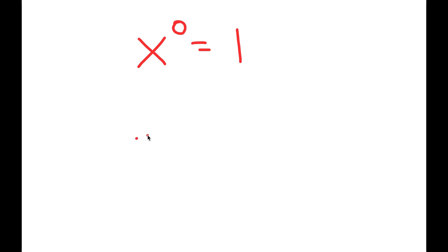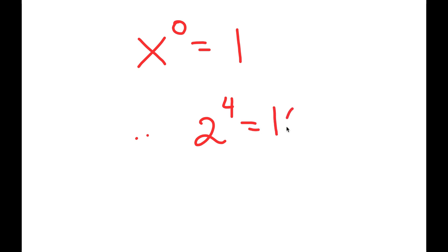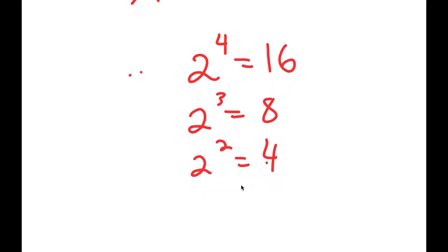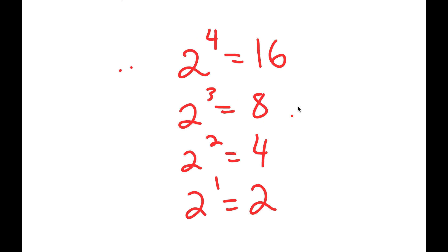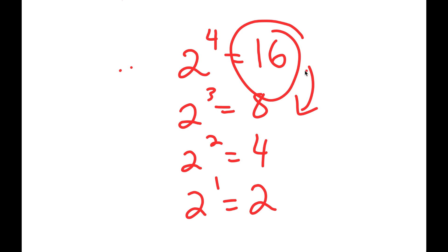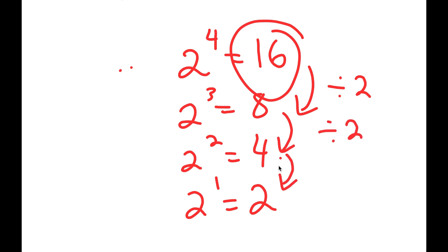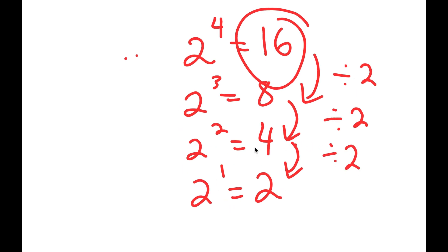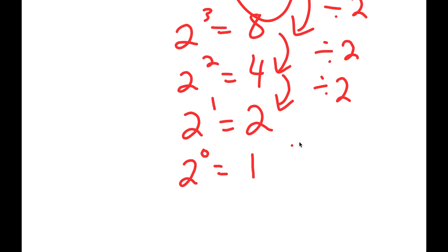Let's use the number 2 as an example. We start with 2 to the power of 4 which is 16, then 2 to the power of 3 which is 8, then 2 squared which is 4, and 2 to the power of 1 which is 2. Tracing backwards: to get from 16 to 8 we divide by 2, to get from 8 to 4 we divide by 2, to get from 4 to 2 we divide by 2. And finally, 2 to the power of 0 equals 1 because 2 divided by 2 is 1.